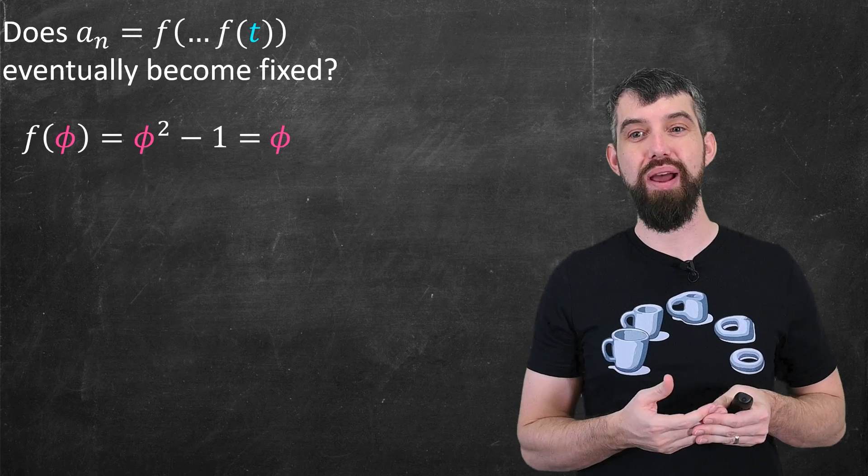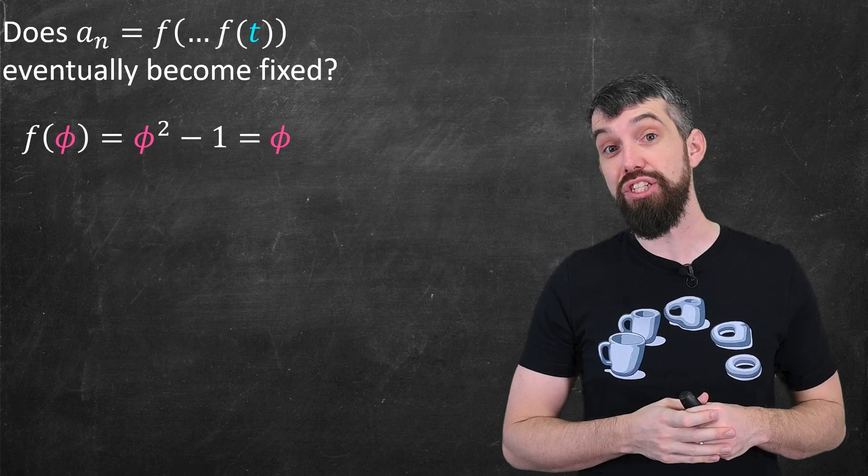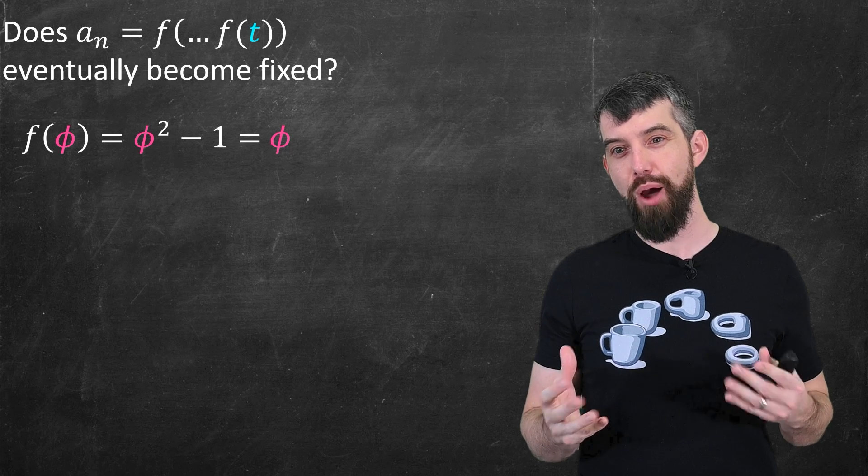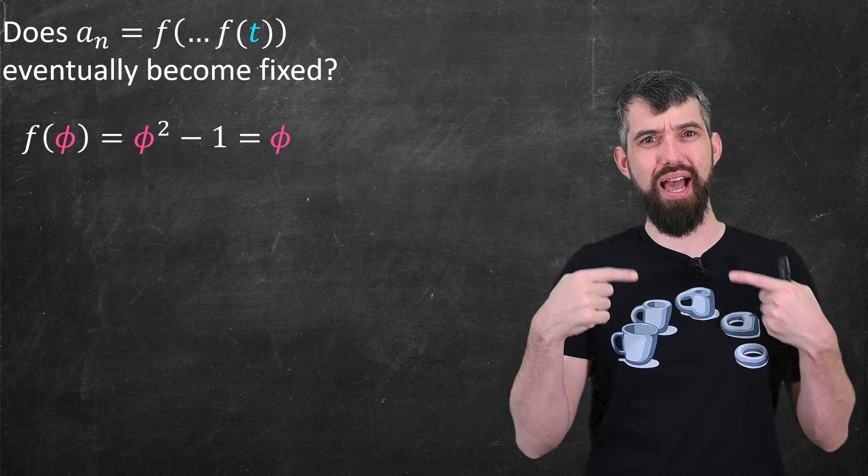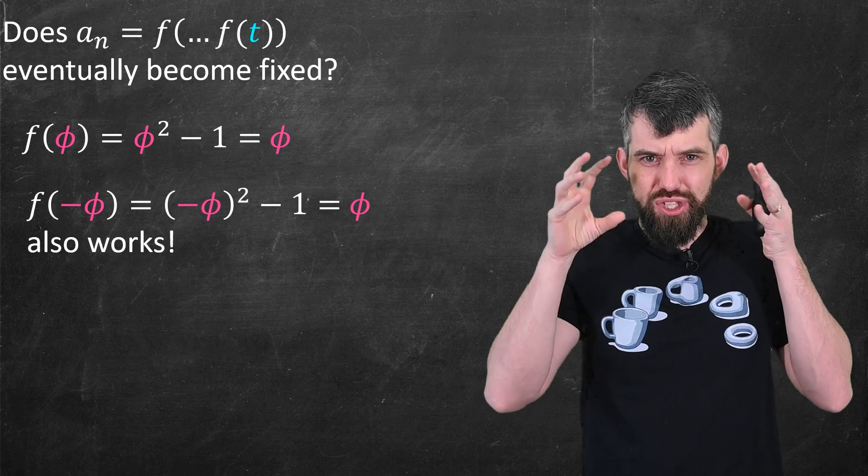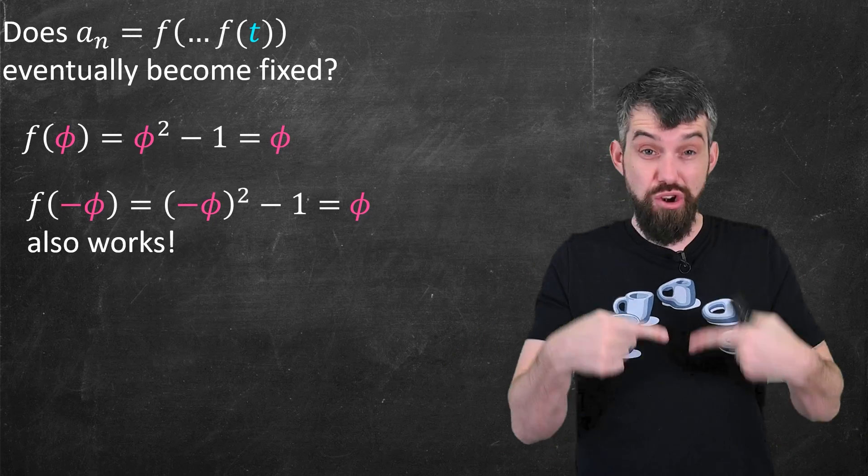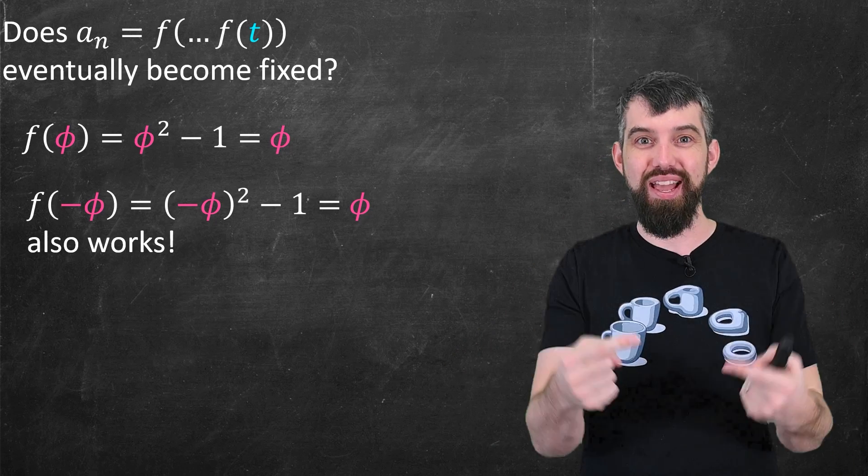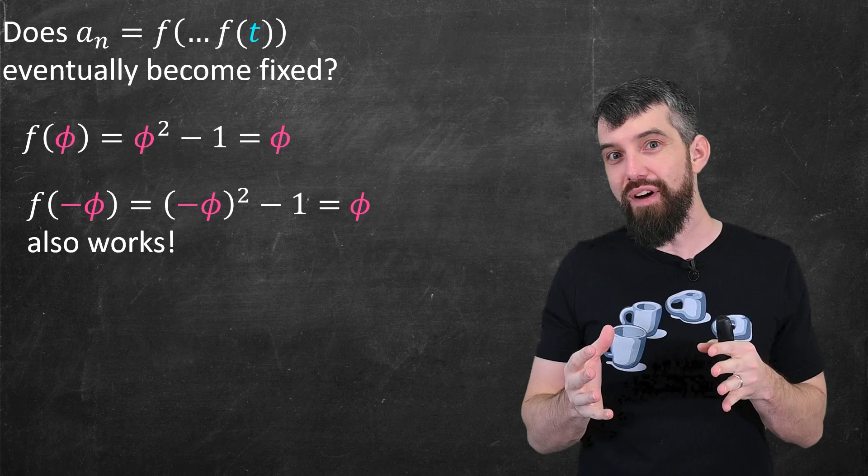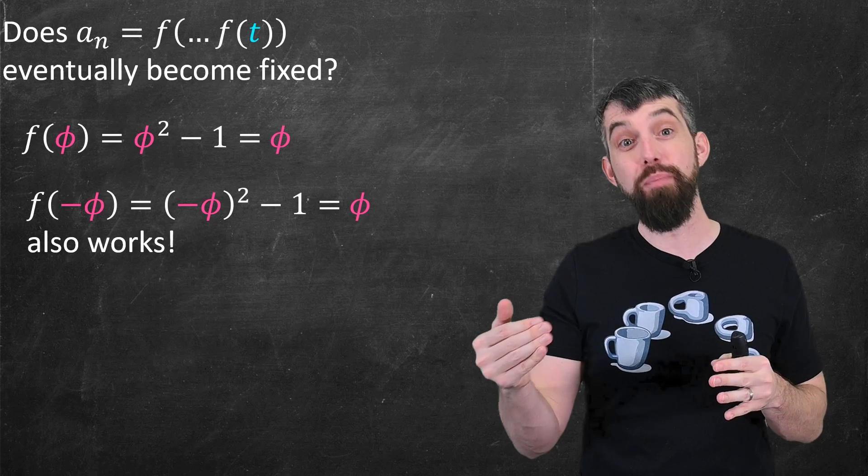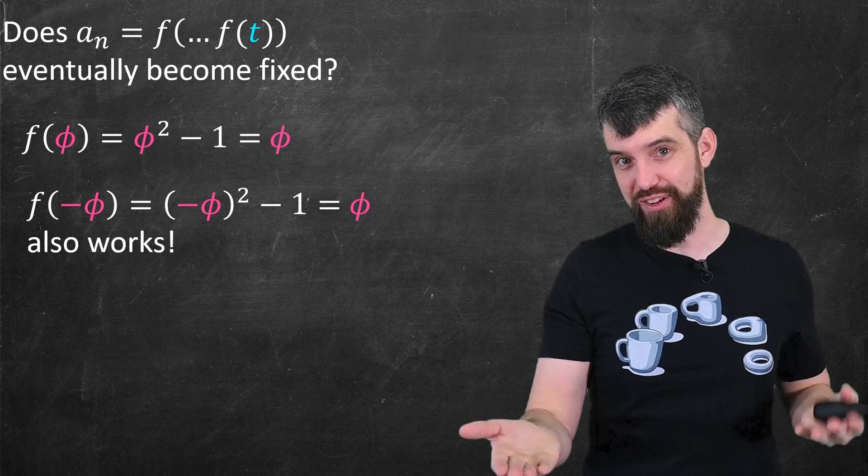For example, we had the property that f of phi, which is always phi squared minus 1, is just equal to phi. That was our definition. The solution to that quadratic was our definition of this particular number. However, because of the square there, it actually also works if you put in a negative. So if you started at negative phi, you then apply f, and you're at positive phi, you apply f again, and you're at the same value over and over and over again. So negative phi is not a fixed point, but it is eventually a fixed point, in the sense that you apply f once and now you are at the fixed point.